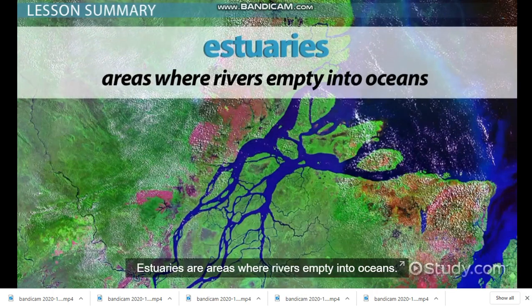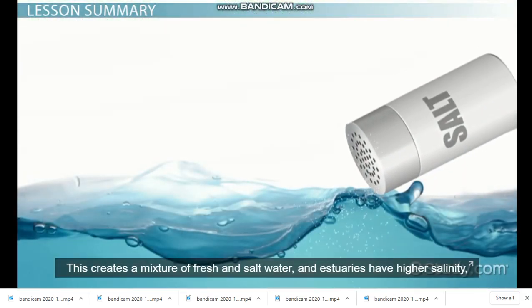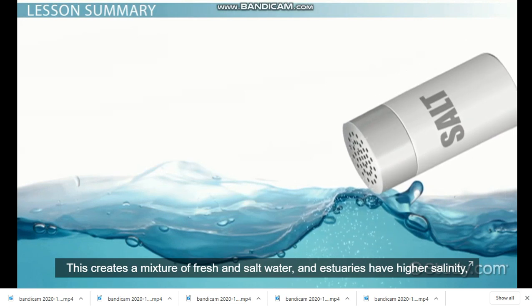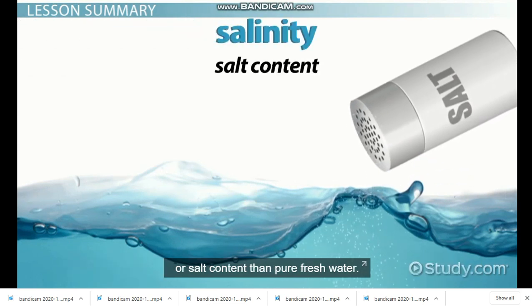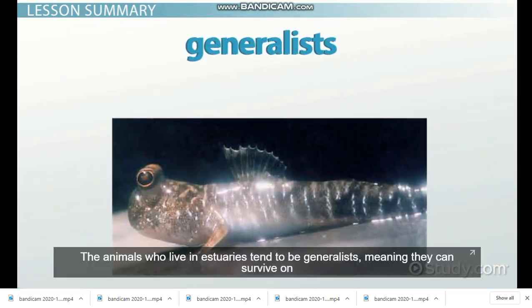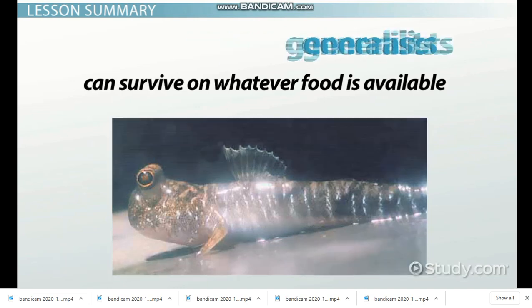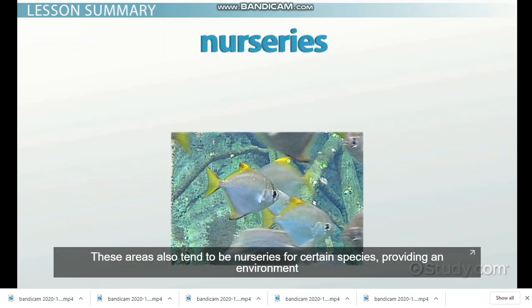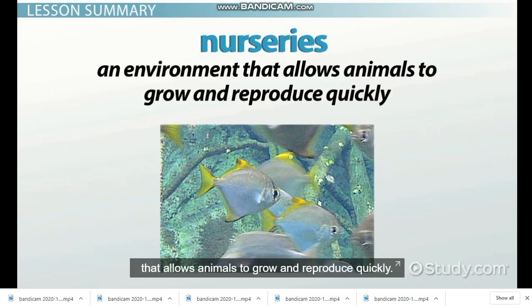Estuaries are areas where rivers empty into oceans, creating a mixture of fresh and salt water. Estuaries have higher salinity than pure fresh water. The animals who live in estuaries tend to be generalists, meaning they can survive on whatever food is available. These areas also tend to be nurseries for certain species, providing an environment that allows animals to grow and reproduce quickly.